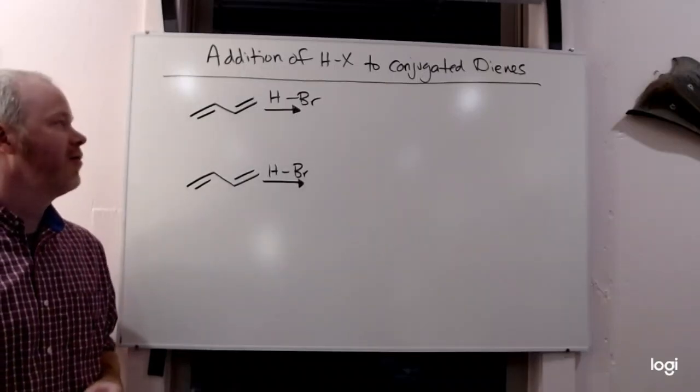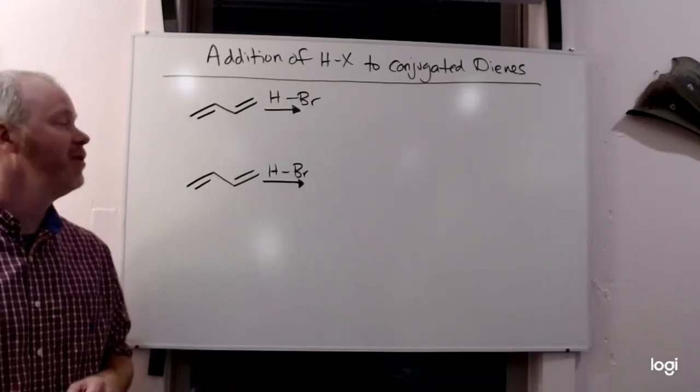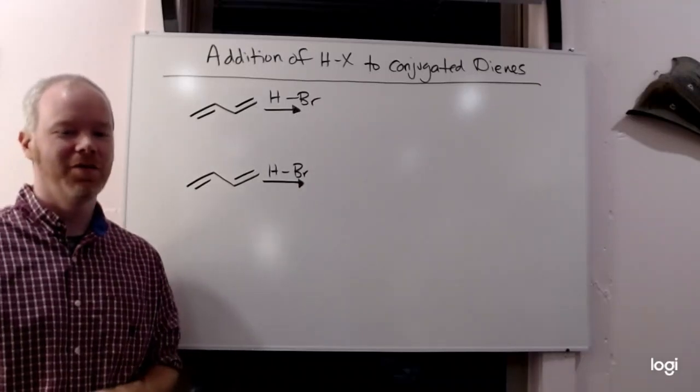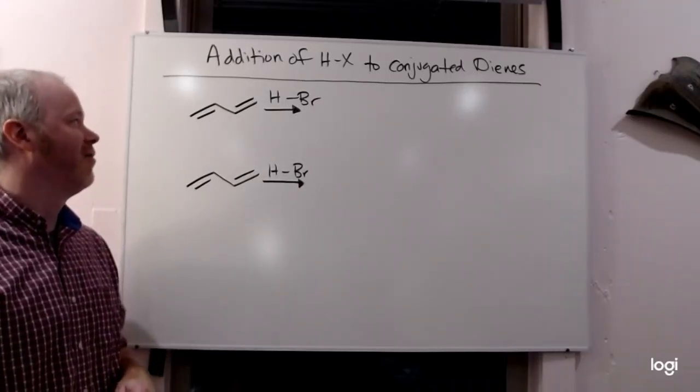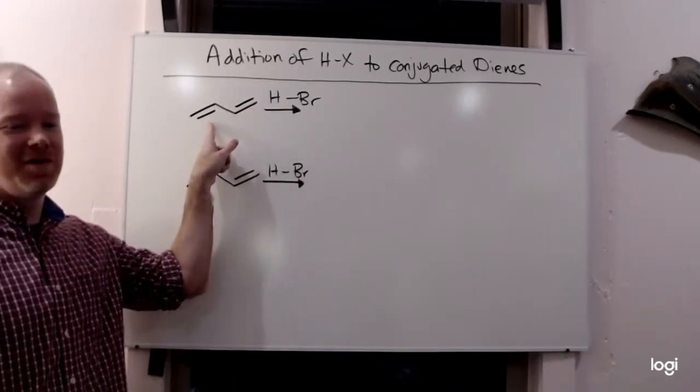This is going to be the addition of HBr or HCl to conjugated dienes. We're going to see the difference of the mechanism when you react to an alkene when it's conjugated with another pi bond.